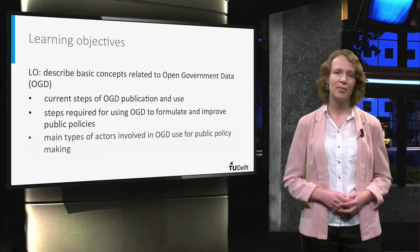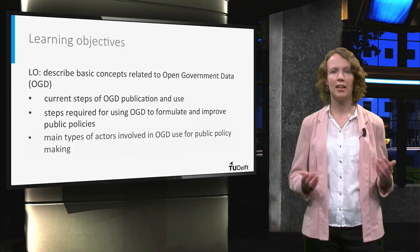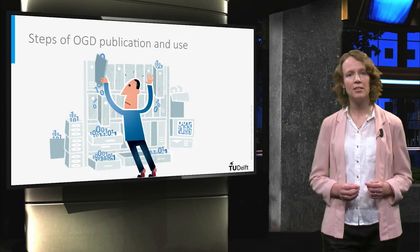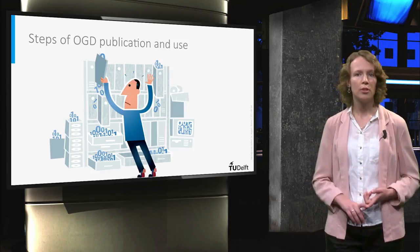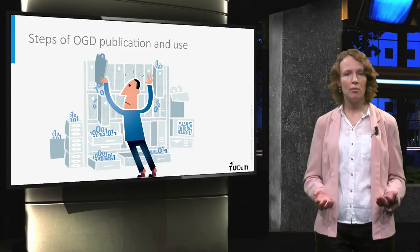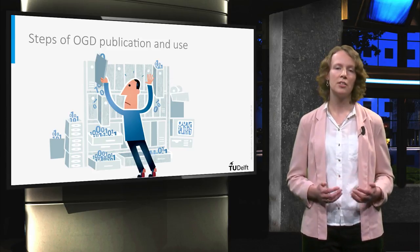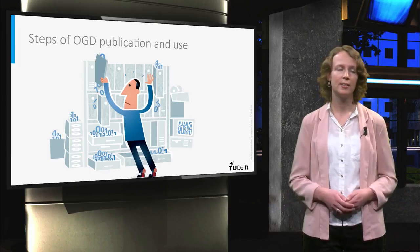So let's start with the current steps of open government data publication and use. From a high level, the current open data process can be divided into four basic steps. First, the data are created. Government organizations and publicly funded research organizations produce, collect and integrate large amounts of data each day. They collect this data to be able to fulfill their ordinary tasks. For instance, the Ministry of Justice collects data about the number of crime victims in order to create its crime prevention policies. The production of this data is funded by public money.